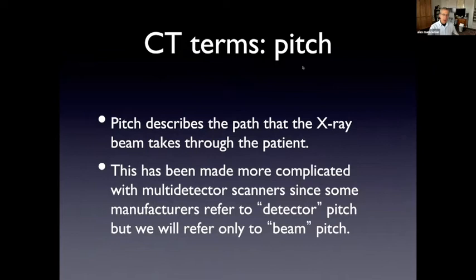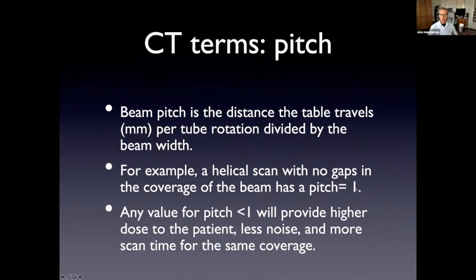Another term that's used is pitch. Pitch is the path that the x-ray beam takes through the patient. The beam pitch is the distance the table travels per tube rotation. For example, a helical scan with no gaps is a pitch of one. Now, if you go below one, now you're looking at some of the volume that you scan more than once. So in a sense, if you measure the same thing several times that you can establish a value that is more accurate because you have less error.